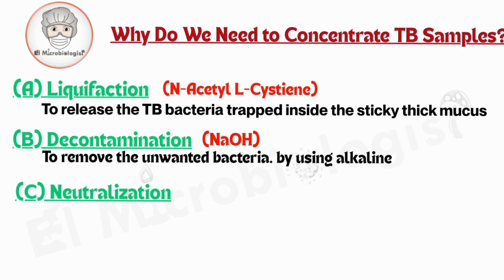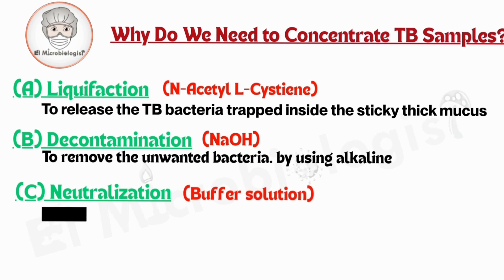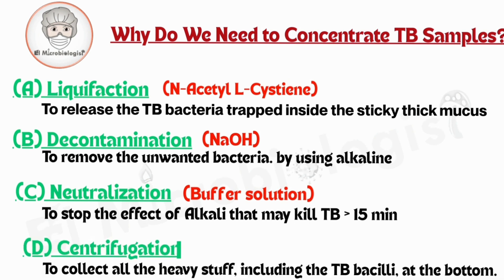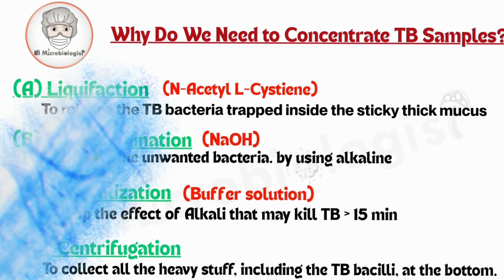Step 3: Neutralization and centrifugation. Once the sample's been treated, we neutralize it to stop the chemical reaction. Then we centrifuge — spinning the sample at high speed to collect all the heavy stuff, including the TB bacilli, at the bottom. That tiny bit of sediment we get? That's gold. That's what we use to make smears for acid-fast staining or to inoculate culture media.